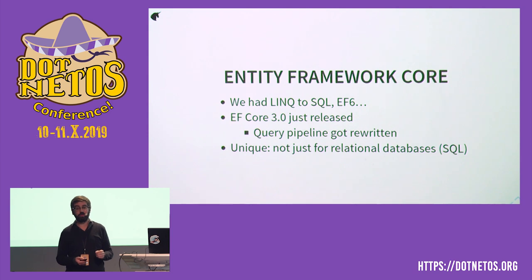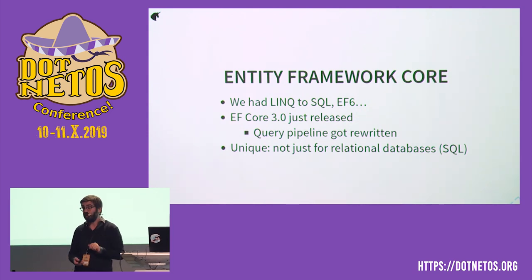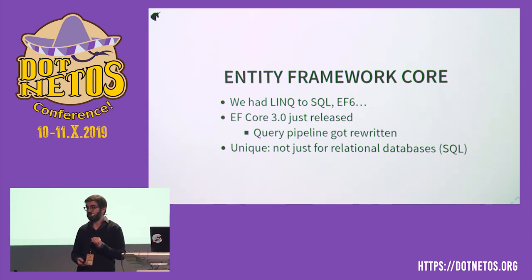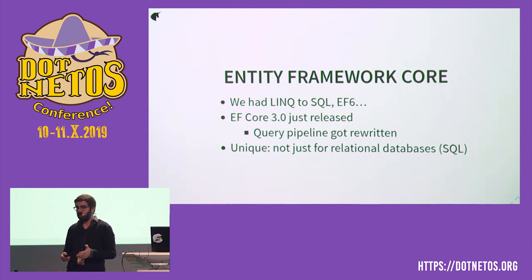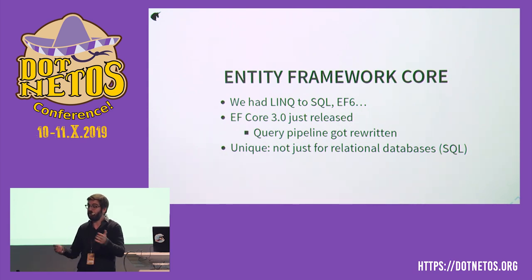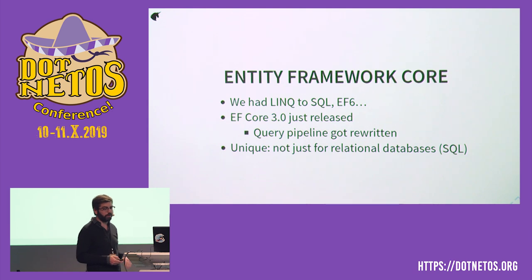One last thing: contrary to most ORMs, EF Core has, as a goal, not to be only about relational databases — it's not just about SQL. EF Core as an architecture has a split: there's a basic part, and then there's the part that's about relational databases. In practice, you can use EF Core to interact with NoSQL databases like MongoDB. There's also an in-memory database you can use. This is an interesting concept and it's going to be a little bit important.